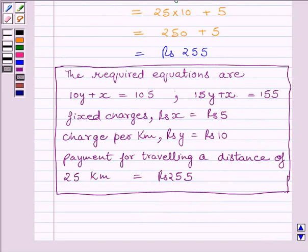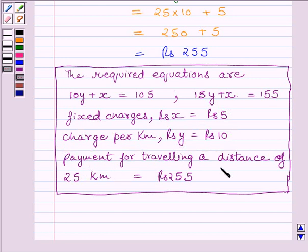So the required equations are: 10y + x = 105 and 15y + x = 155. Fixed charges, Rs. x = Rs. 5; charge per km, Rs. y = Rs. 10; and the payment for travelling 25 km = Rs. 255. This is our final answer. Hope you understood the session. Have a nice day and goodbye.